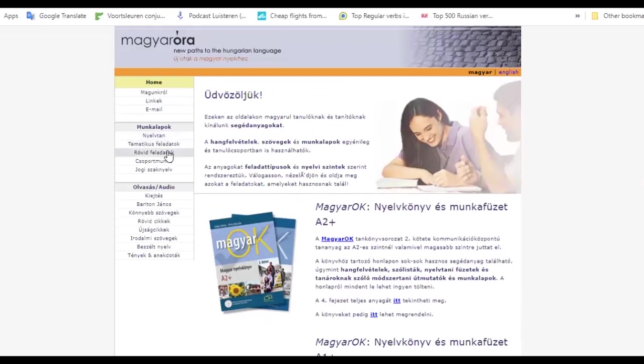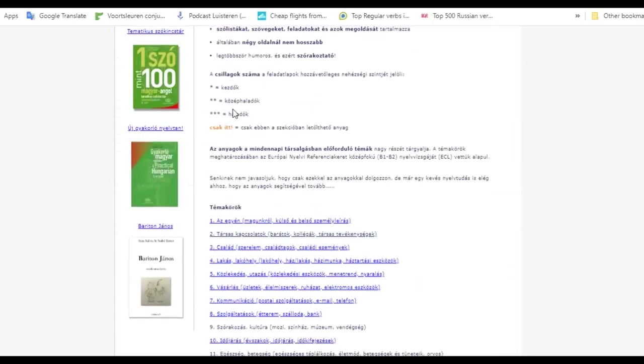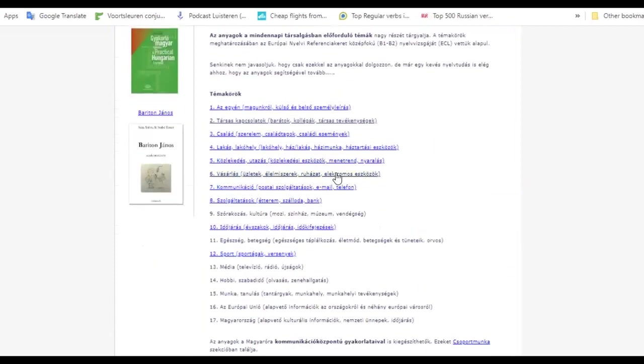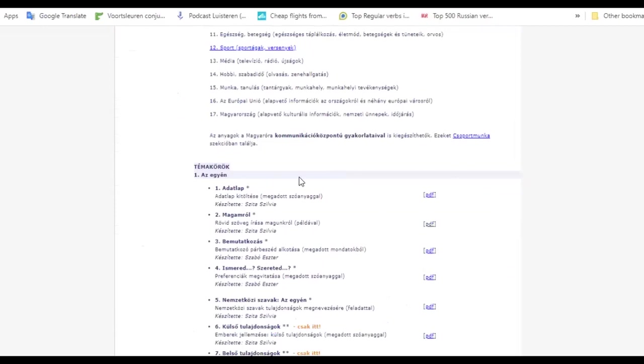So for example if I click here on thematikus feladatok, everything is divided, it's categorized according to beginner, intermediate or advanced level students. So if you for example want to know how to introduce yourself properly in Hungarian, you can come here, for example, 'magamról' - about myself. You click on the pdf and you can also download it. It's totally free, you don't have to pay.